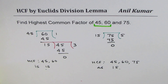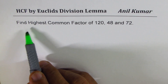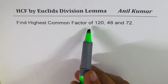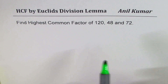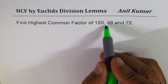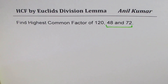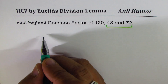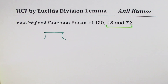Let's do one more practice question with three numbers. This time we have to find the highest common factor of 120, 48, and 72. It's better to begin with the smaller numbers, so let's do the division with 72 and 48.